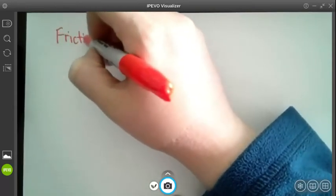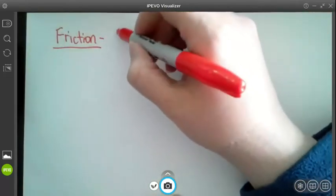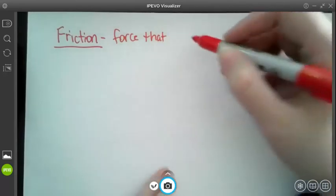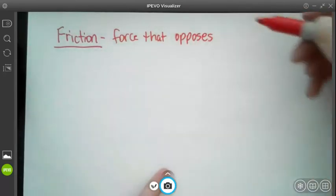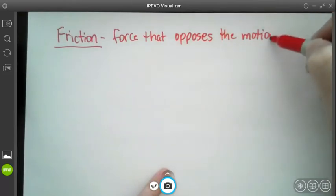So what friction is, friction is the force that opposes the motion between two materials.